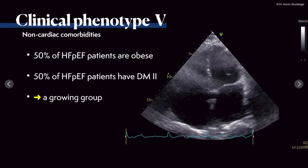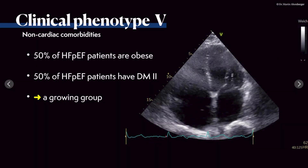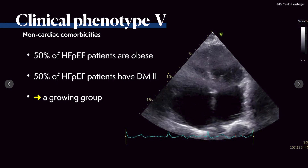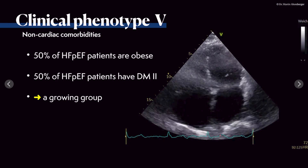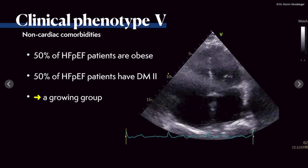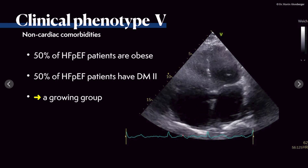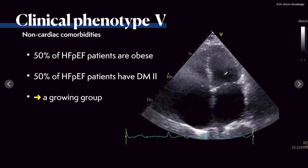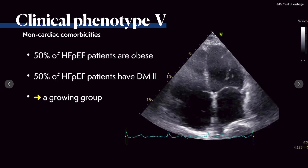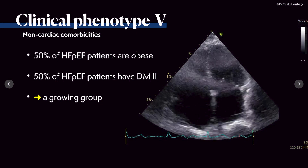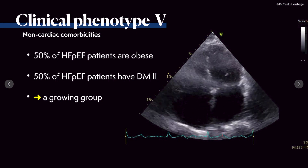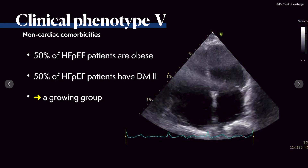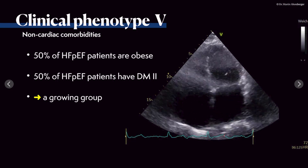The next phenotype is phenotype 5, which is about non-cardiac comorbidities. These include obese patients and patients with diabetes. It's a growing group because more and more patients have diabetes and more and more people are obese. 50% of HFpEF patients are obese and 50% of HFpEF patients have diabetes mellitus type 2. This is indeed a growing group.